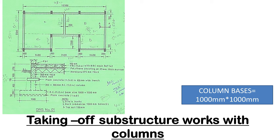Hello everyone, welcome back for another video. Today we'll be doing taking off substructure works with columns. As you can see on our plan, it has a recess at the center and an additional wall passing at the center towards the recess. Our plan is unique because the columns are at the walls and also extend outside the walls. At the section we have been given section AA, showing the column which extends downwards. This is the takeoff we'll be doing today.